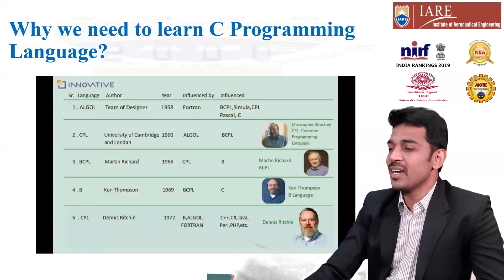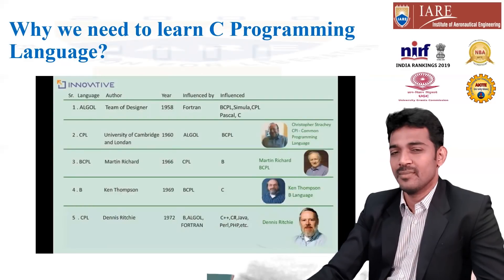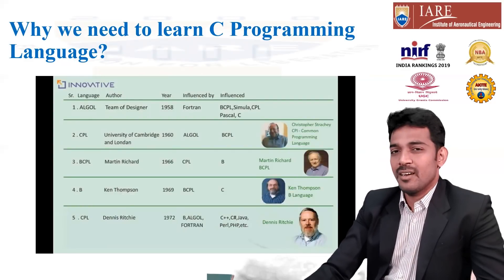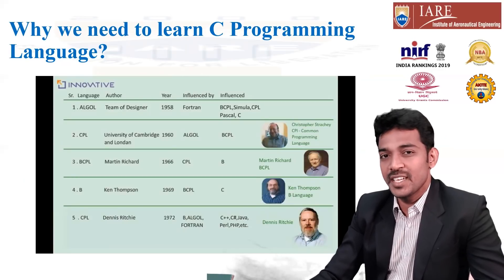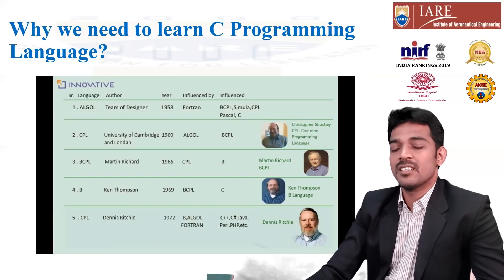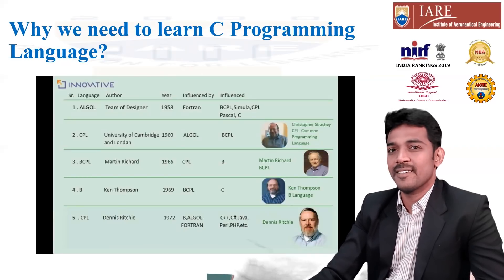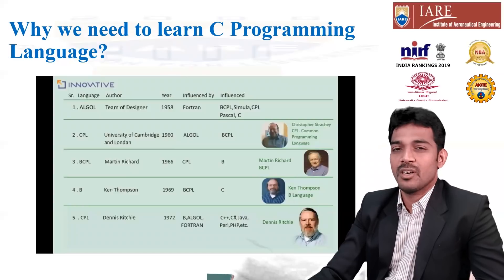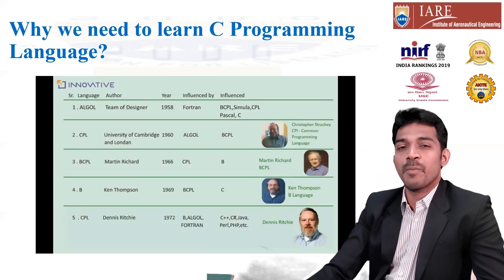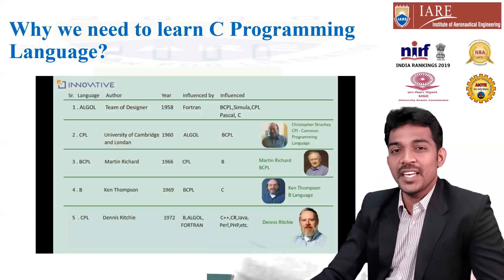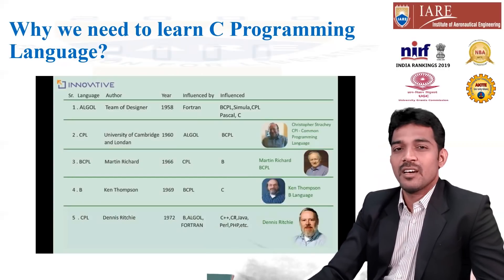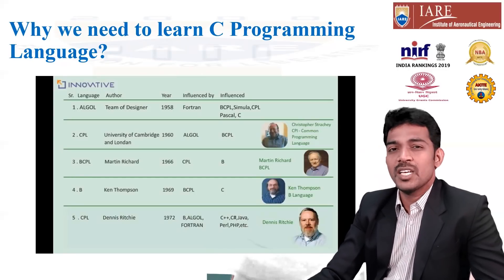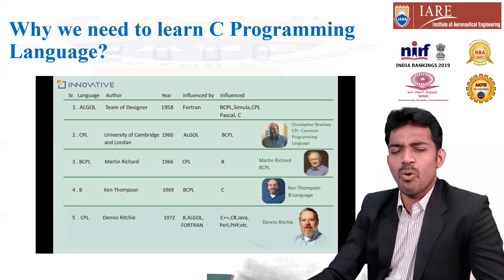Why we need to learn C programming language? The programming language concept started in 1958 — it is called ALGOL, an algorithmic based language. The full-fledged language was developed by Dennis Ritchie in 1972 at Bell Laboratory. The programming languages which are in use now — Java, Python — all these languages have their basis in the C programming language.